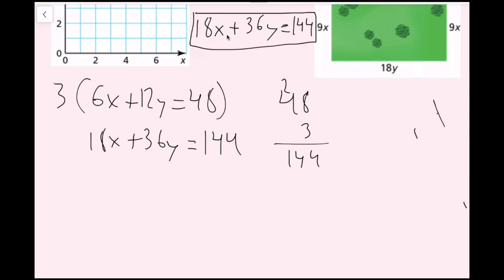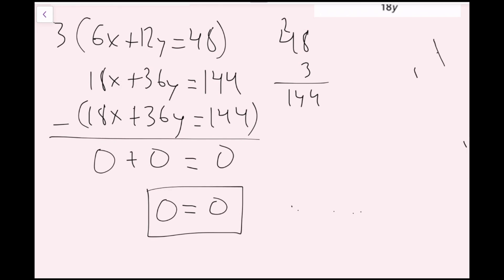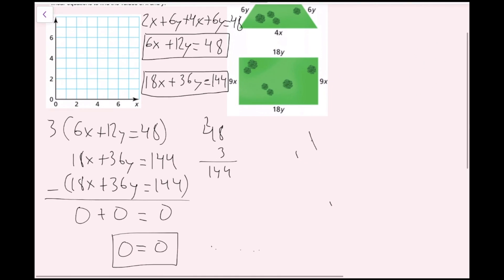Let's do it out. Bringing down the second equation — 18x plus 36y equals 144 — and subtracting: 18x minus 18x is 0, 36y minus 36y is 0, and 144 minus 144 equals 0. So this is a 0 equals 0 case. These two equations are equal to each other when 0 equals 0 — and that's always true. That makes sense because they're the same equation. So all values of x and y on this line are solutions, making this another infinitely many solutions case.